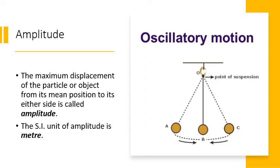What is oscillatory motion? It is just the to and fro motion of an object. In this picture you can see that B is the mean position or resting stage of the particle. The distance between the point B and A or B and C is the amplitude.